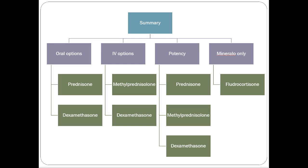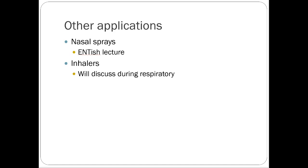For the test, know your oral steroid options — prednisone and dexamethasone are common oral glucocorticoids. IV options are methylprednisolone and dexamethasone. Know their relative potencies, which is most versus least potent, and that fludrocortisone is mineralocorticoid only. Know the mechanism of action and basic categorization. We'll also discuss steroid nasal sprays in the ENT lecture and inhalers during respiratory — two major areas of steroid use we haven't covered yet.